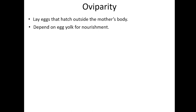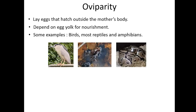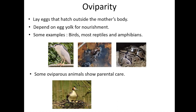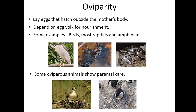In oviparity, the fertilized eggs are laid outside the body of the mother, and the young depend on yolk for their nourishment. Some examples of oviparous animals are birds, amphibians, and reptiles. Some oviparous animals show parental care — for example, some birds make nests to protect their eggs, while penguins keep their eggs on their feet and cover them with a fold of warm skin.